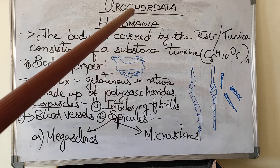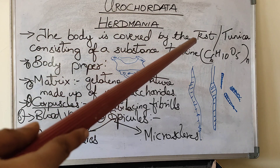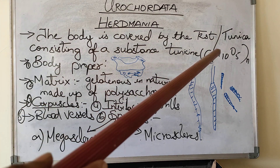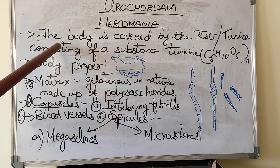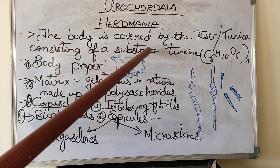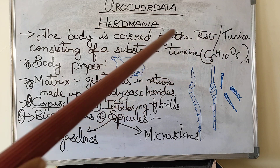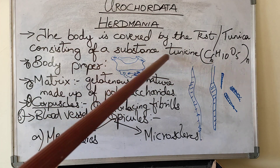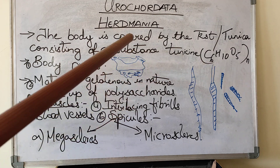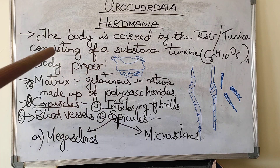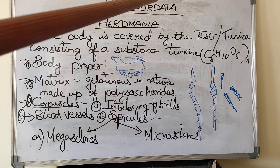The unique character, as I told you all, in Urochordata is the presence of test or tunica, which acts as a protective layer. The body is covered by the test or tunica — test or tunica are both the same — consisting of a substance called tunicine. This is equal to cellulose, and this is a unique character which is present in Urochordata.